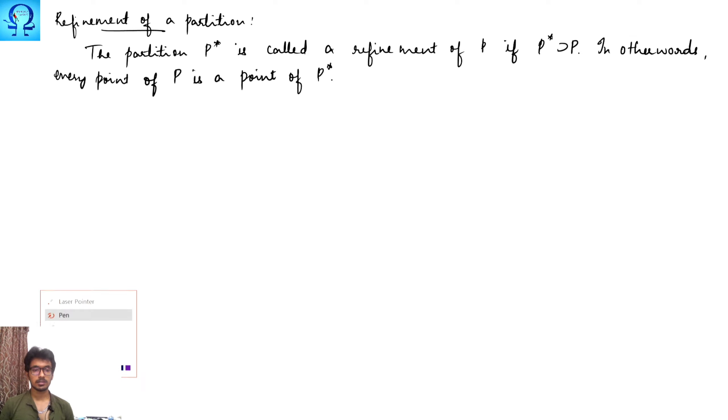In simpler notations, if you consider A to B, this collection of points is my partition P. Along with this, if you add a few more points, I have just added only one point, and this collection of points I am taking as P star. I can see that all the members of P are also members of P star, whereas the converse may not be true. Hence, P star is called the refinement of P.